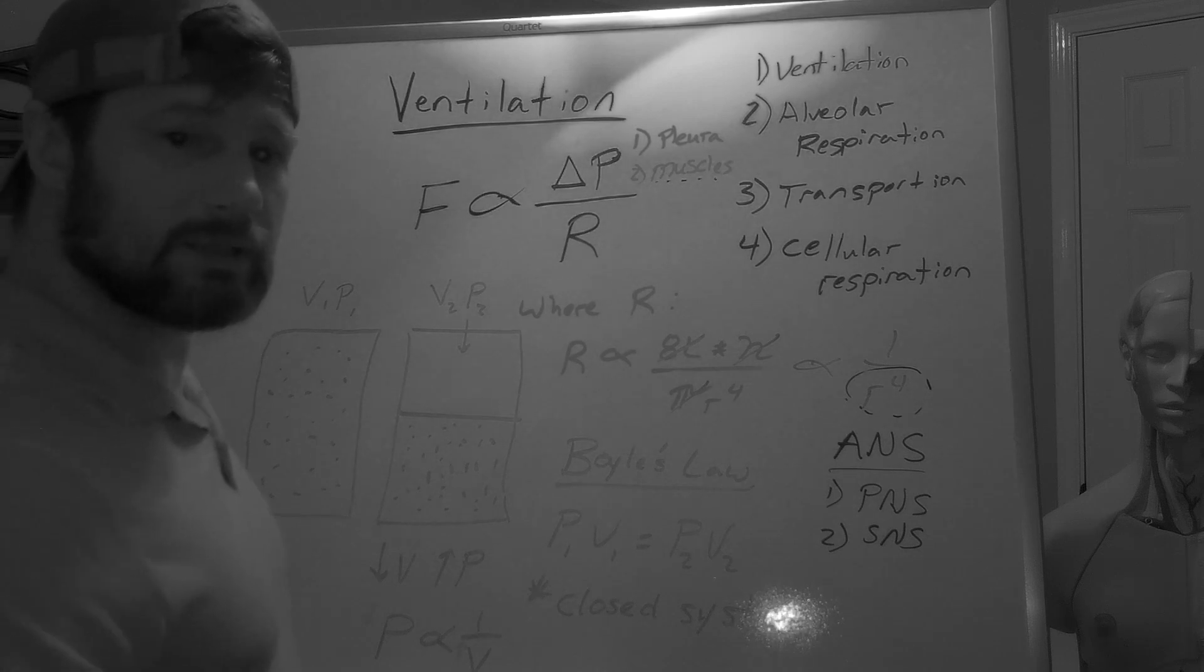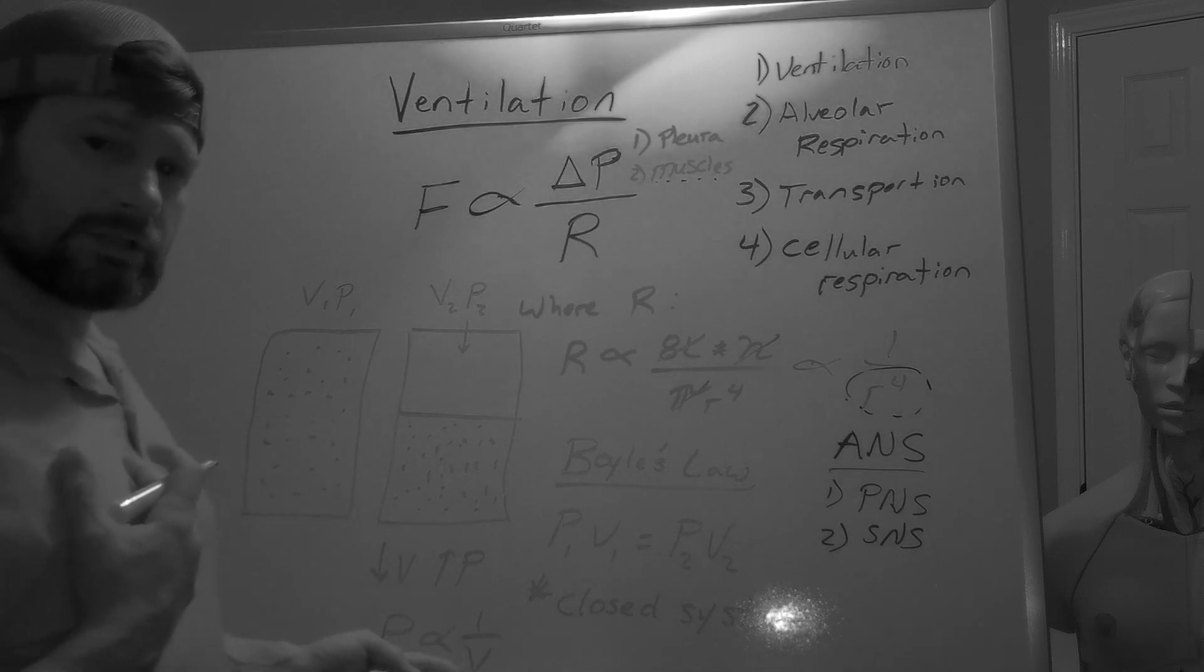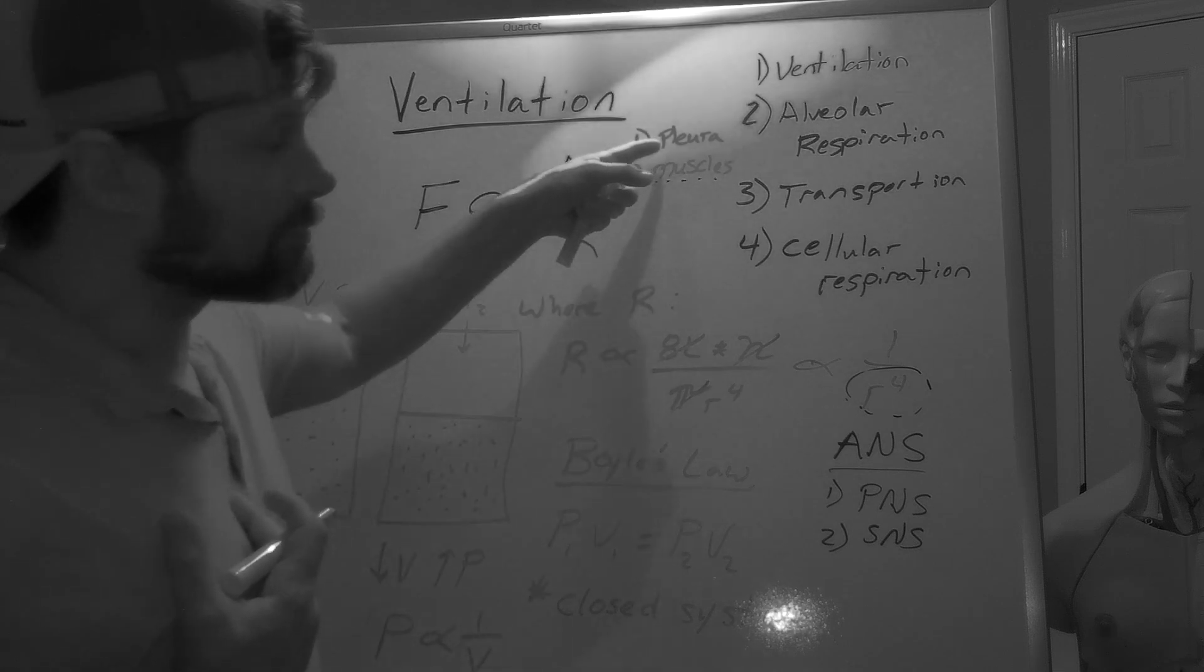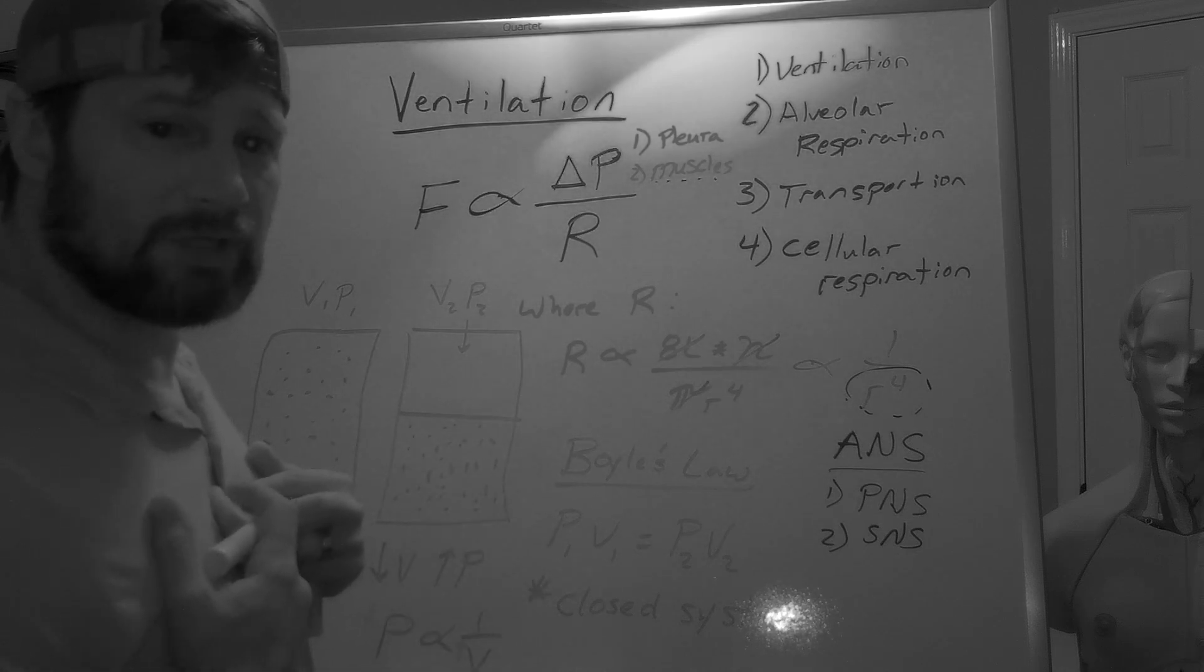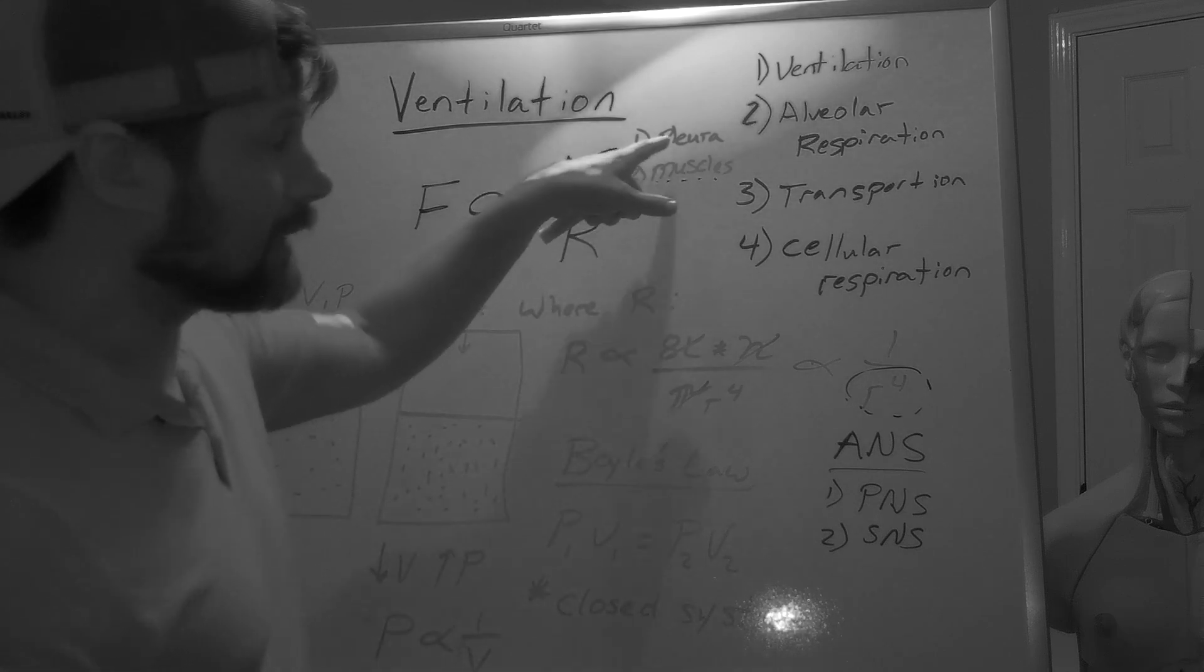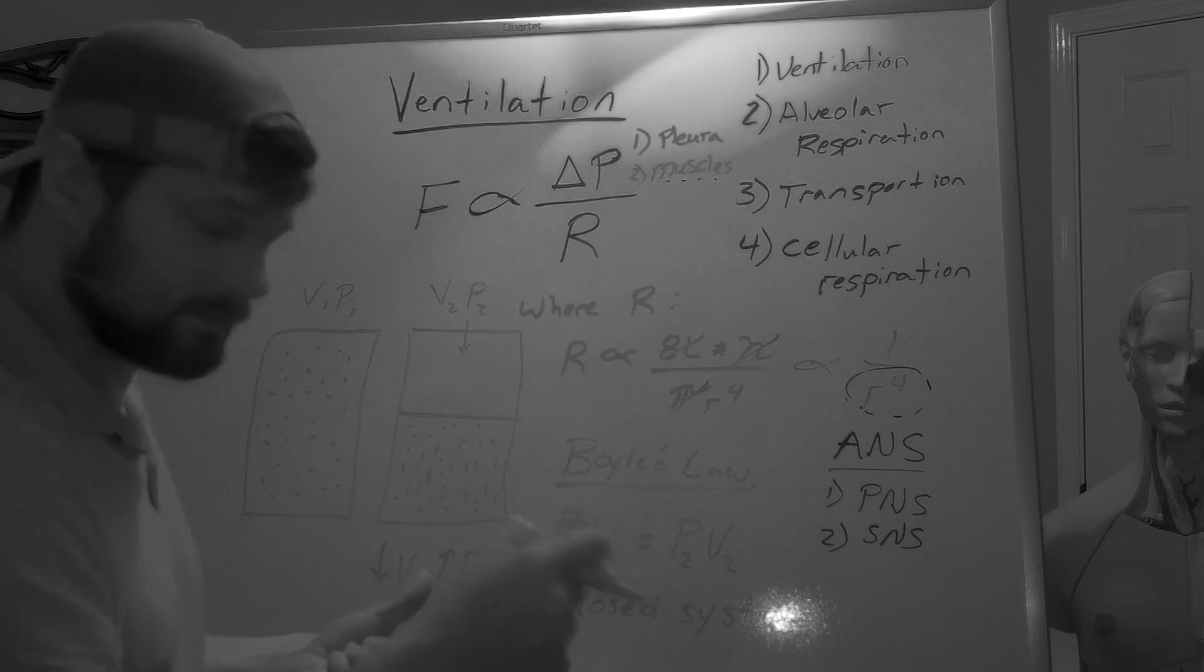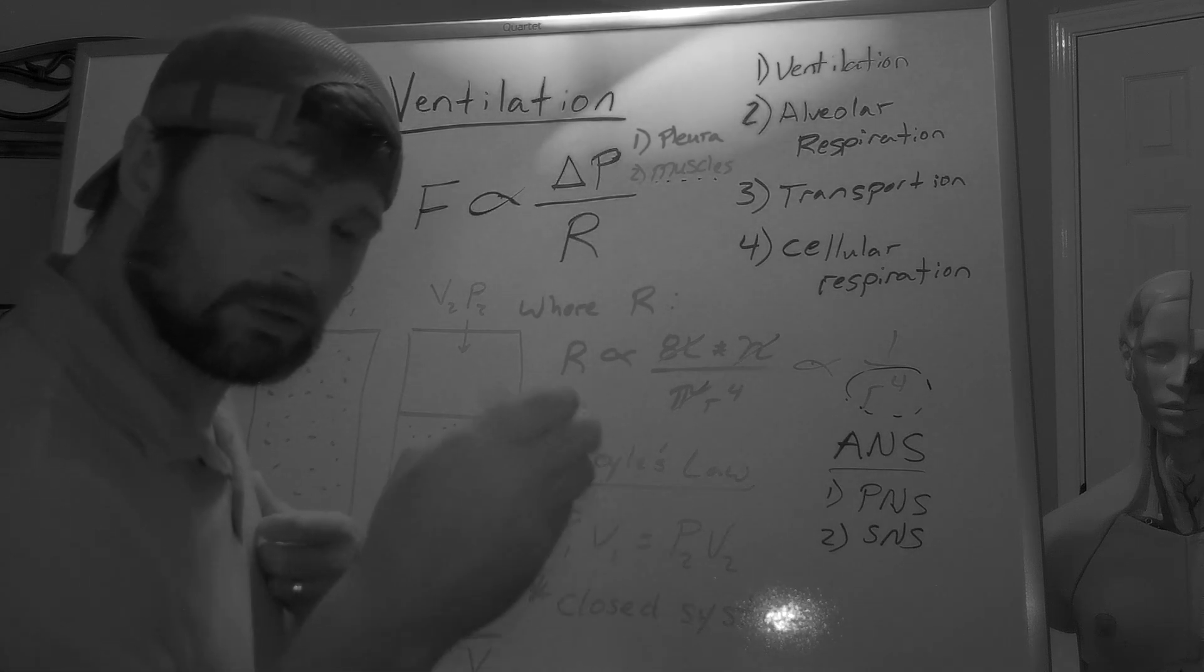So now everybody take a nice deep breath in. What just happened to the volume of your thoracic cavity? It just increased in size. Due to the muscles that we are activating, the volume of the thoracic cavity increases. Due to the pleura, which inflates your lungs and allows your lungs to be adhered to the thoracic cavity, when the thoracic cavity increases in size, in volume, then the lungs, due to their adhesion because of the pleura, the lungs will also increase in volume. Now, what did we just say about pressure? As the volume increases, the pressure inside that system will decrease.